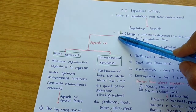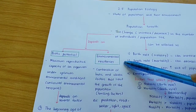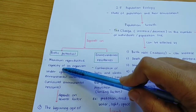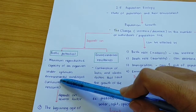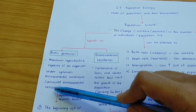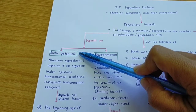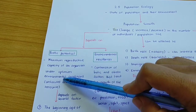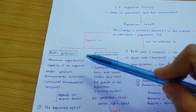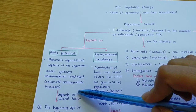Population growth will depend on two things: the first is biotic potential, and the second is environmental resistance. Biotic potential is defined as the maximum reproductive capacity of an organism under optimum environmental conditions — that is, when the environmental resources are unlimited. We can also say it is the ability of the organism to reproduce under optimum environmental conditions.